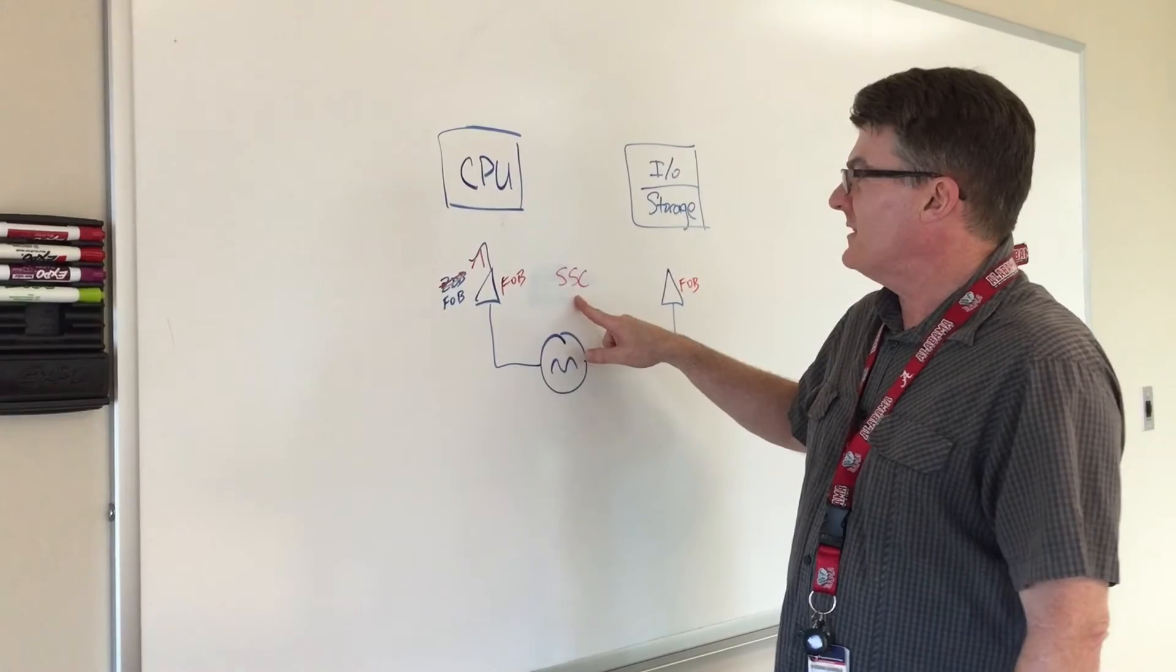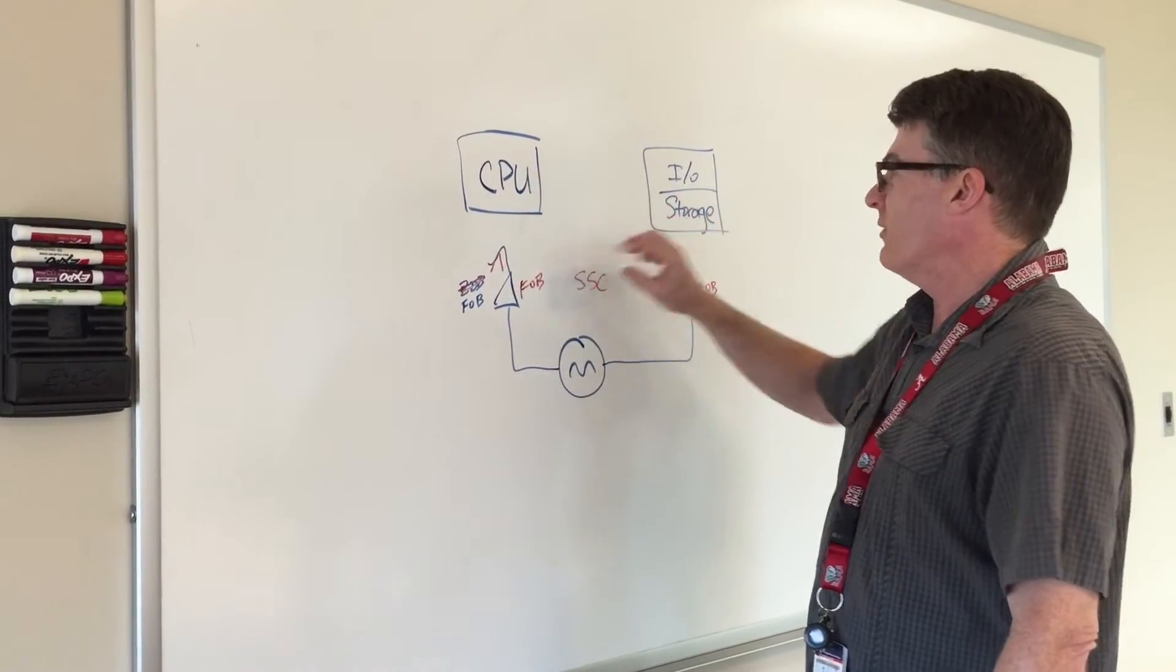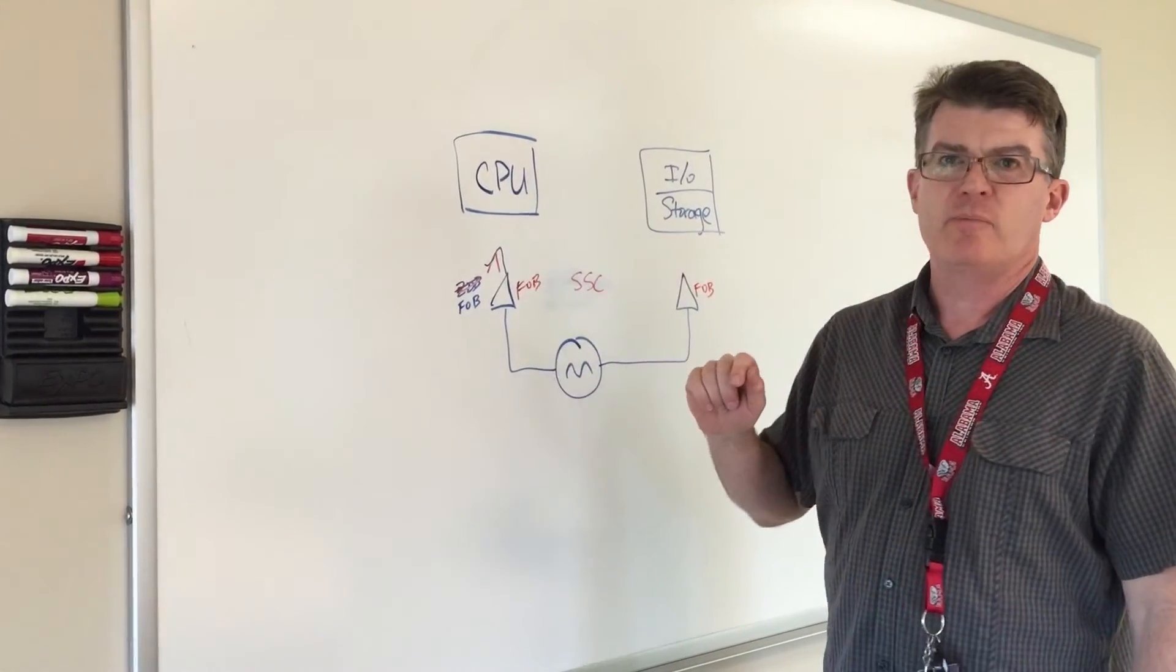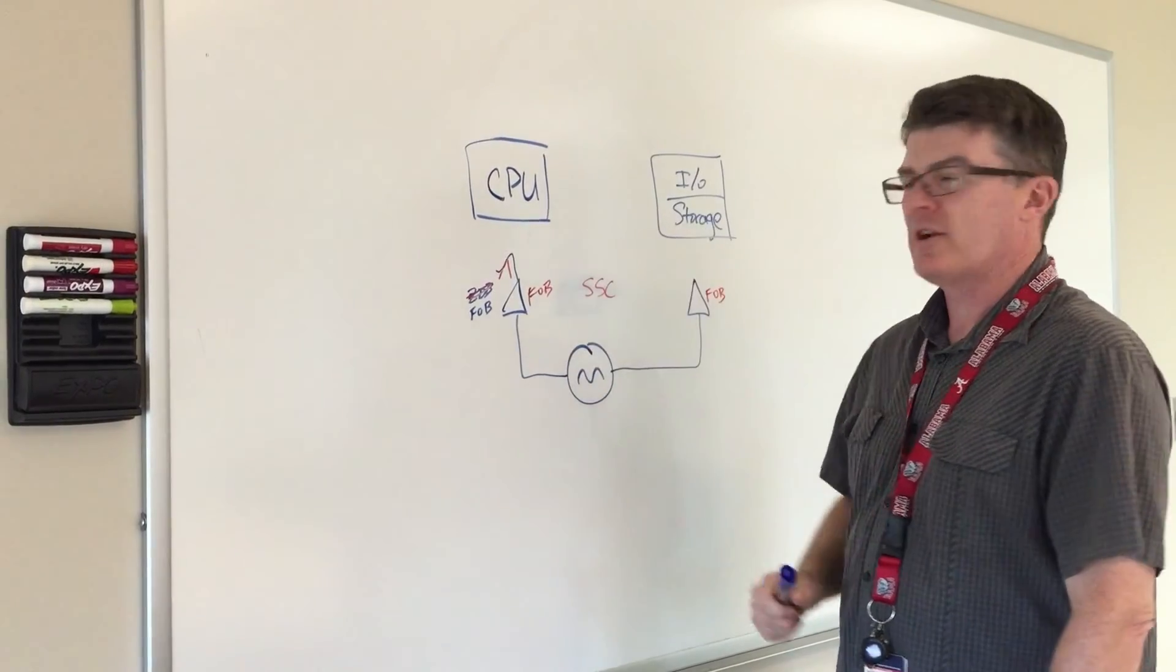So with SSC, you have your spread spectrum clock generator, but any fan out buffering, any buffering at all, has to be a fan out buffer without a PLL. That's a limitation on the architecture.